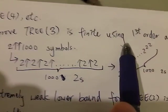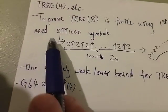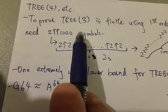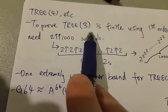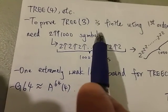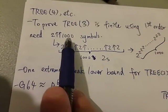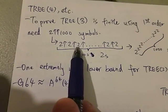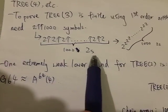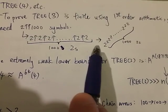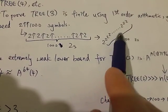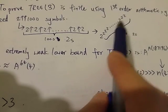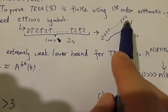In order to prove TREE(3) is finite using only the first order, you would need this many symbols. So 2↑↑1000. This is just the amount of symbols you need to use to calculate TREE(3). This is not the number TREE(3) itself. This is just the amount of symbols you need in your proof. So how big is this number? Again, this is a very big number. 2↑↑1000 means a power tower with a thousand twos in it. So this is a very big number. Just the first few twos at the top is already bigger than the googolplex.